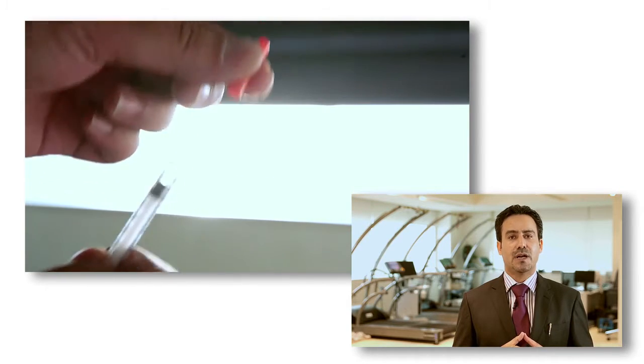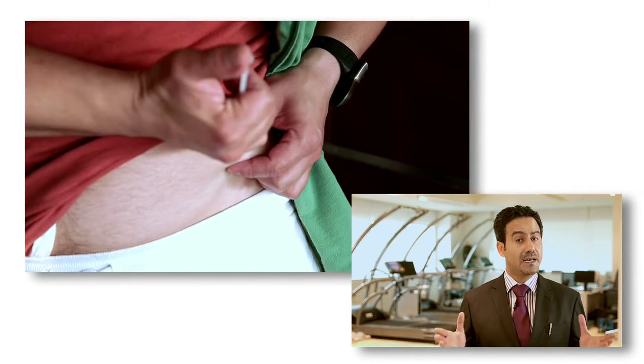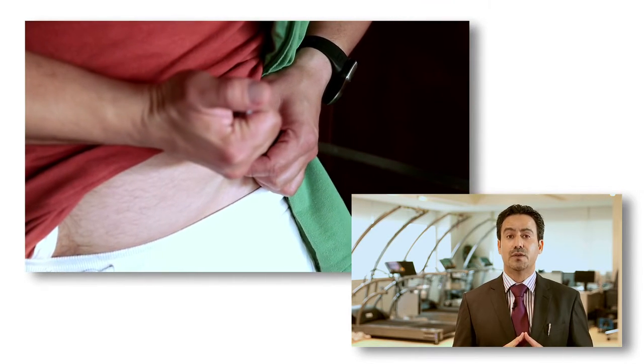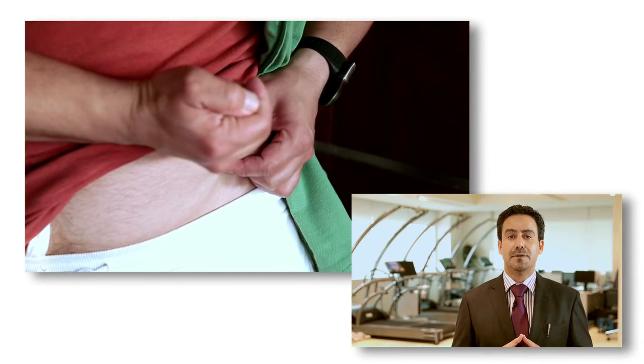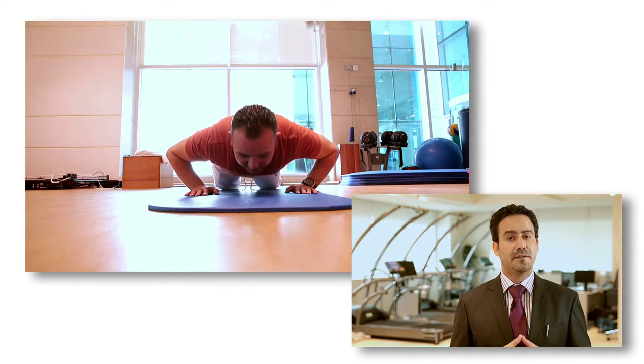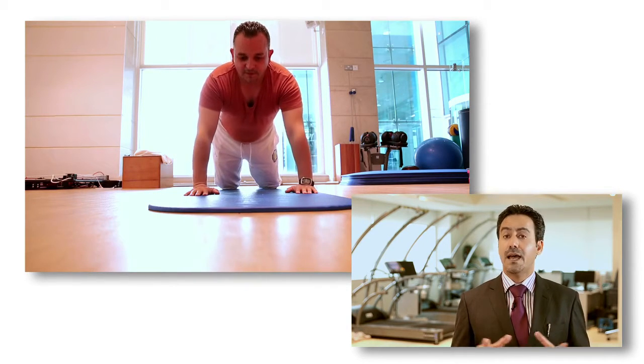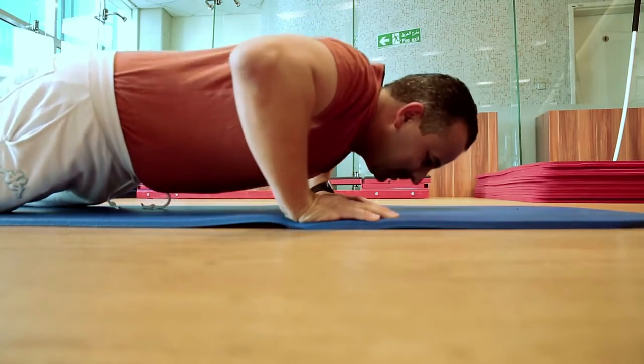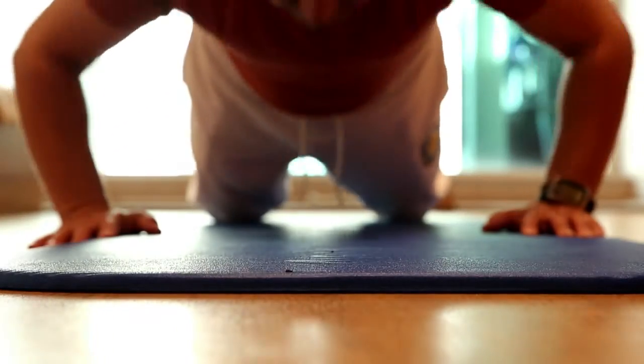Reduce the last dose of insulin by 30 to 50% when doing intensive exercises. Do not inject the muscles you focus on during your exercises. Have a snack of carbohydrates to eat in case of a sudden drop of sugar. Try to exercise with a partner to help you in case of emergencies. Use a medical alert bracelet during exercise, as physical activity significantly affects blood sugar levels.